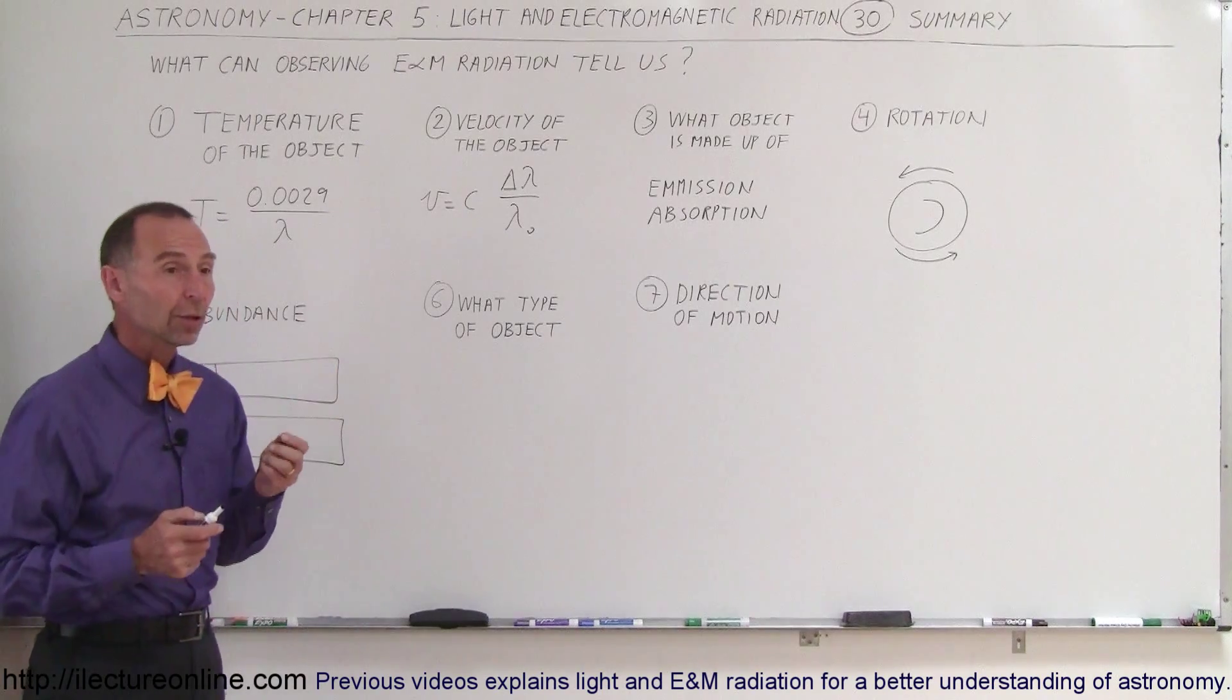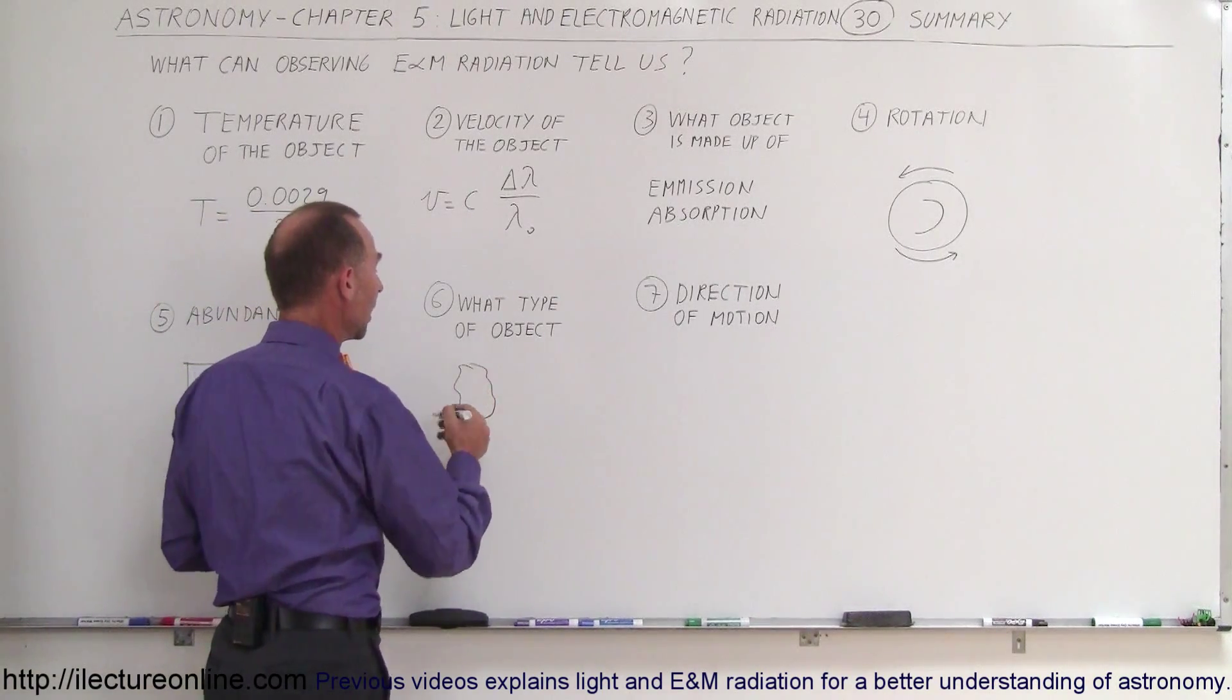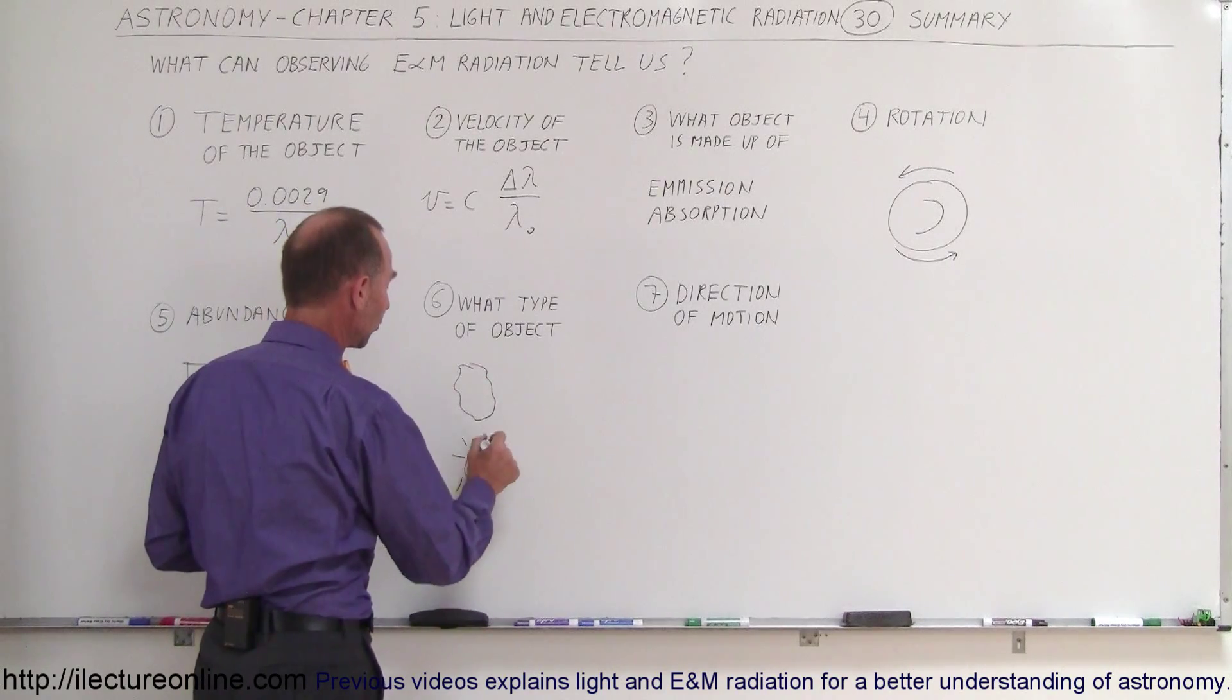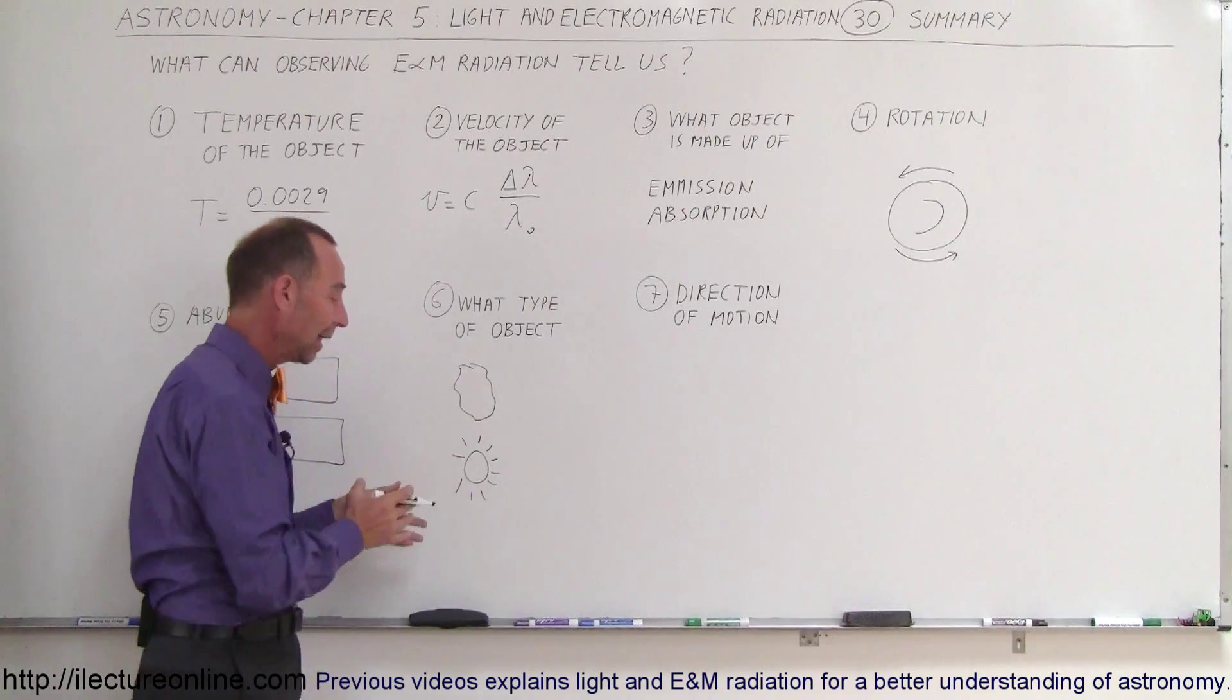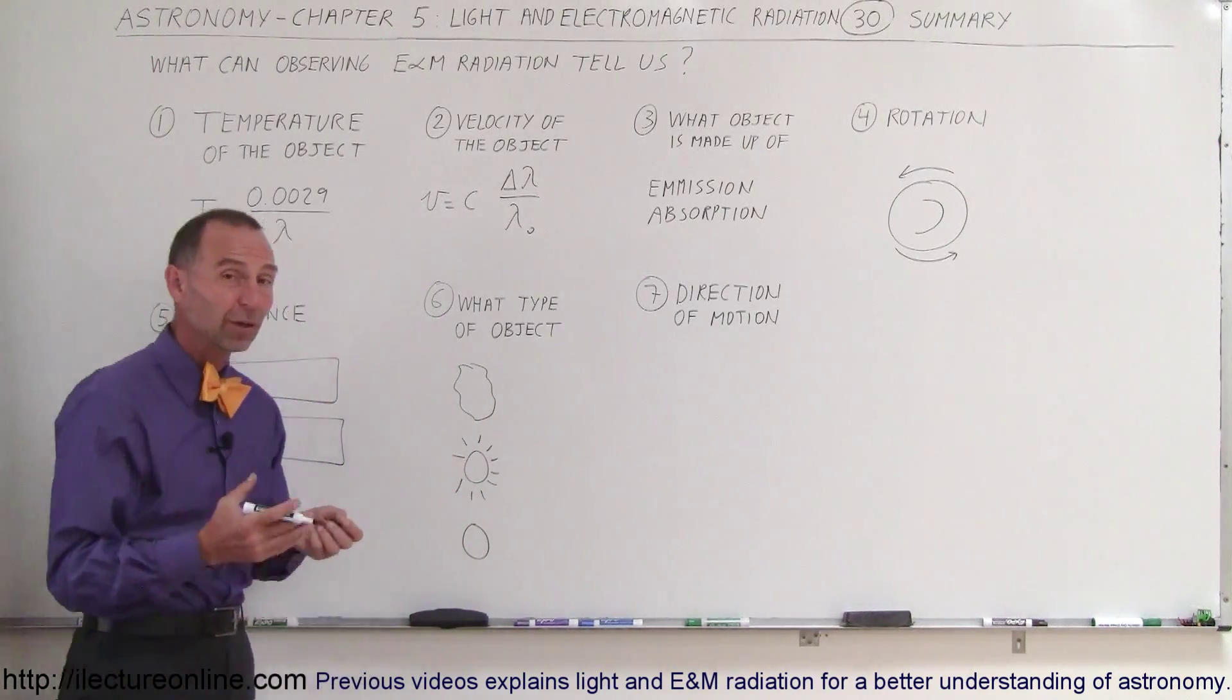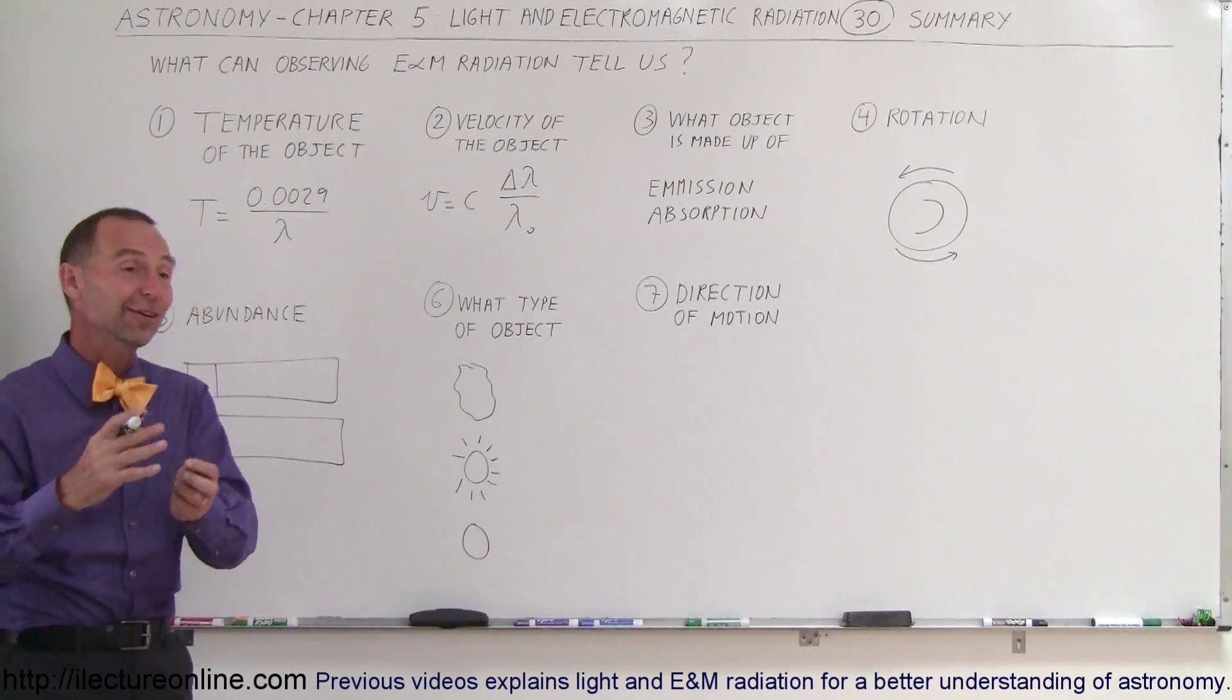What type of object we're dealing with? We can say that if there's a nebula there, we're going to see an emission spectrum. If there's a star, we can see an absorption spectrum. And for example, a planet, we can probably see a continuous spectrum, because the radiation there will not have any absorption, unless there's an atmosphere there.